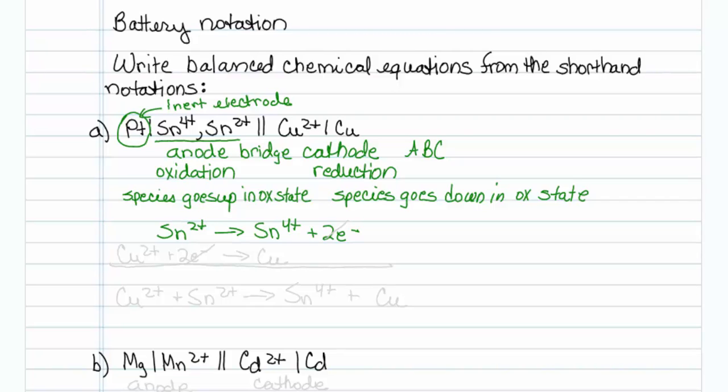I know the other one is a cathode, and reduction occurs at the cathode. So that has to be copper 2 plus plus two electrons going to copper. Copper 2 plus is being reduced, reduction is gaining electrons, and I'm going down in copper oxidation state.